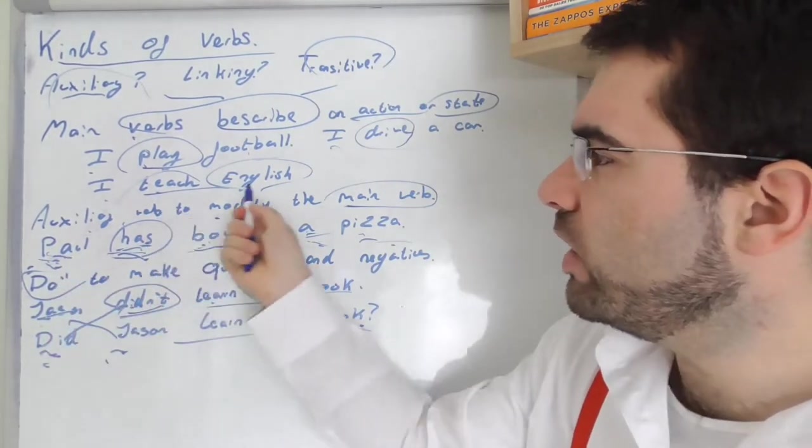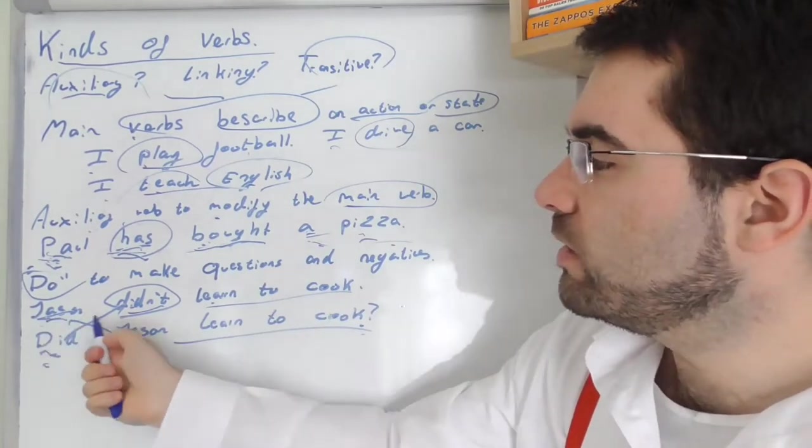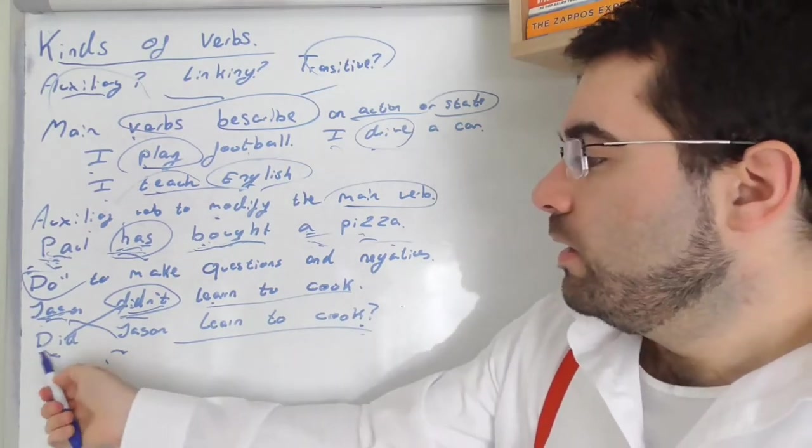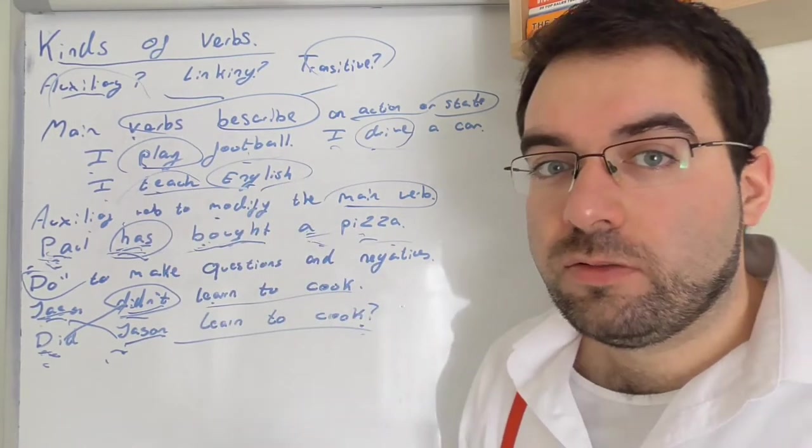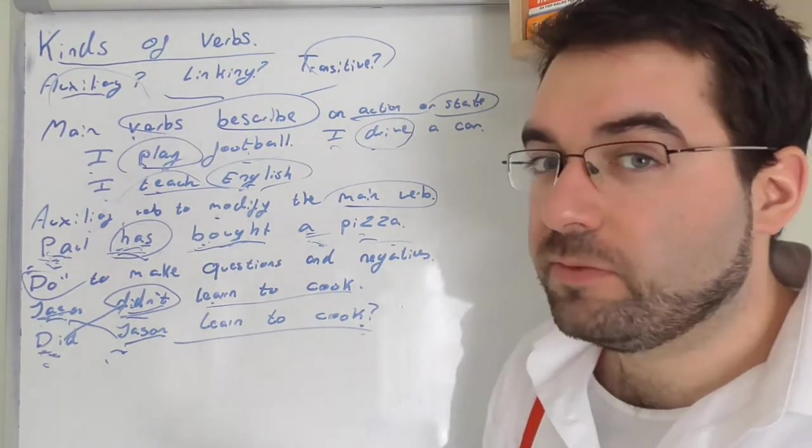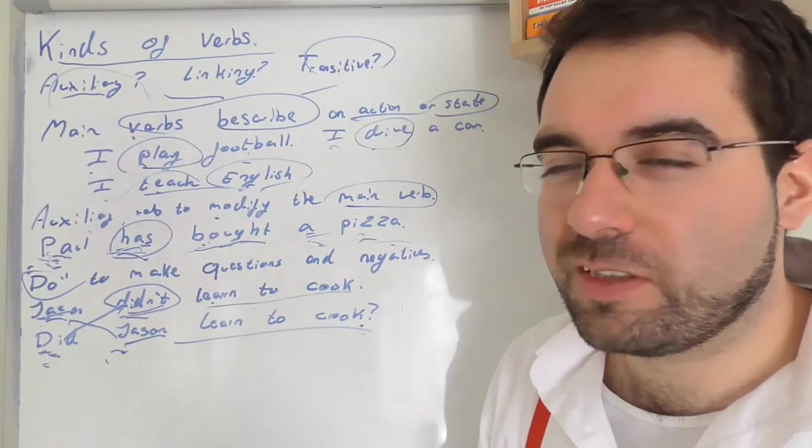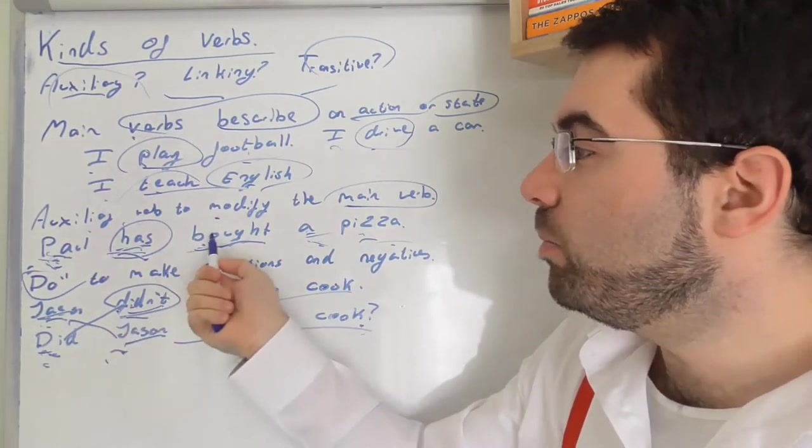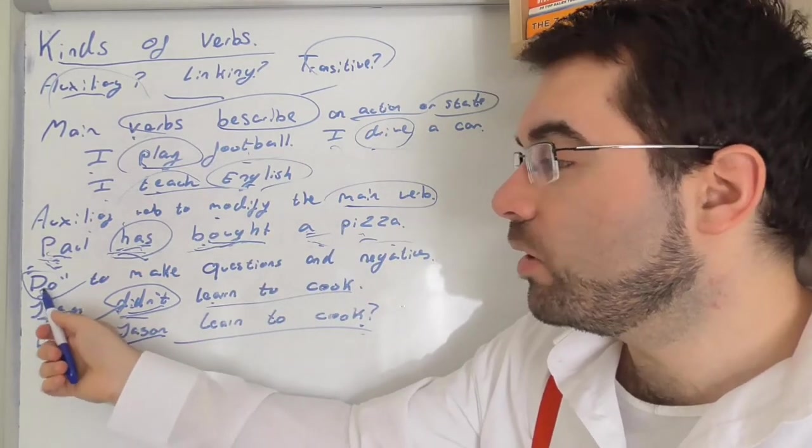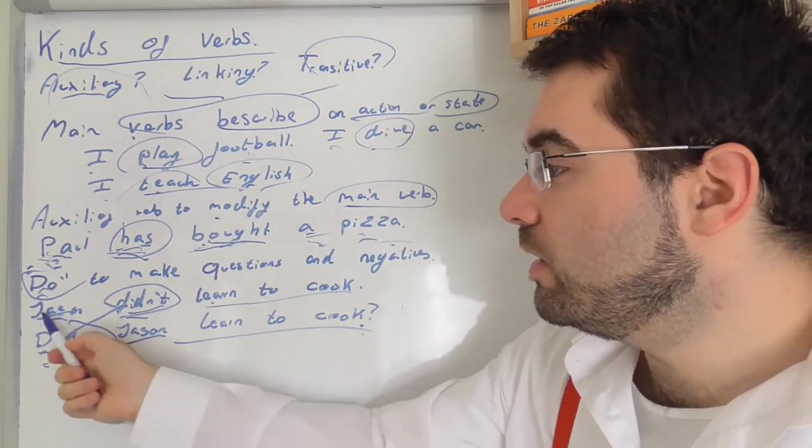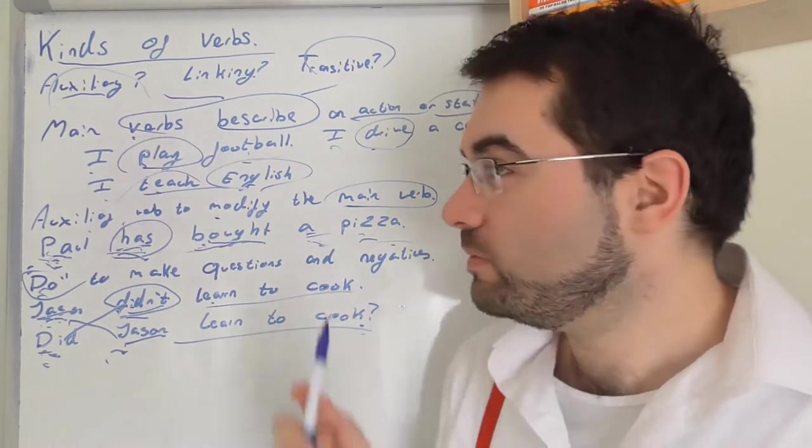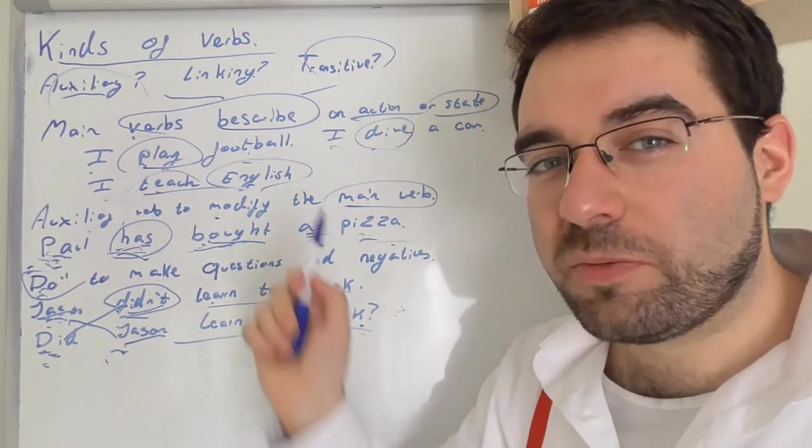But then if we move the did and the subject, swap them around, we can create a question. Did Jason learn to cook? Jason teach English yesterday. Jason didn't drive a car recently. Did Jason play football yesterday? Did he play? Will he play? Let's not get too confusing. Jason didn't buy. Did Jason didn't buy pizza? Interesting. Let's keep going. There's always more to learn.